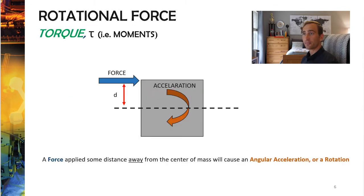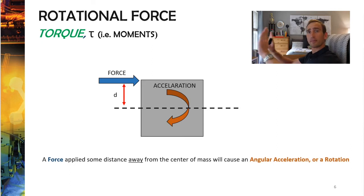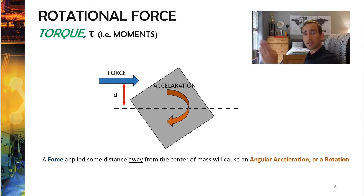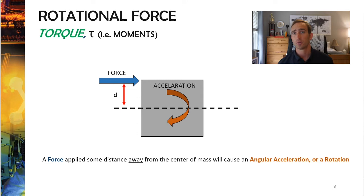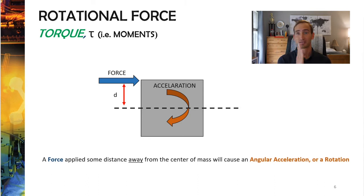If we take an object and apply our force not through the center of mass, but a little bit higher up away from that center of mass, what you can predict is going to happen is that the object is going to rotate or spin. You've seen this all the time — maybe you're pushing a refrigerator and you can either cause it to slide or cause it to tip over.